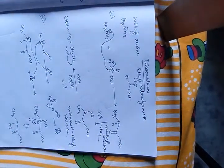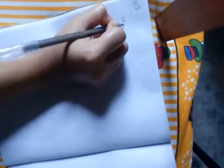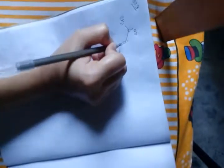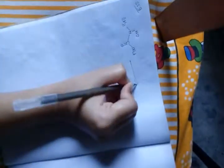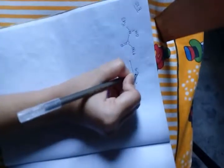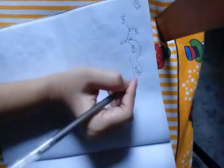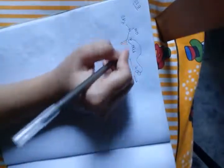Mechanism of step 3: N-nitroso-N-methyl urethane is taken, then it is attacked by HO- of KOH. It attacks the carbonyl carbon as a nucleophile.